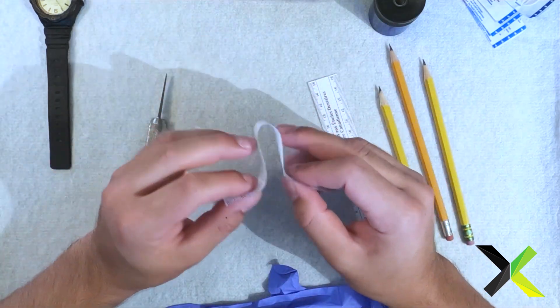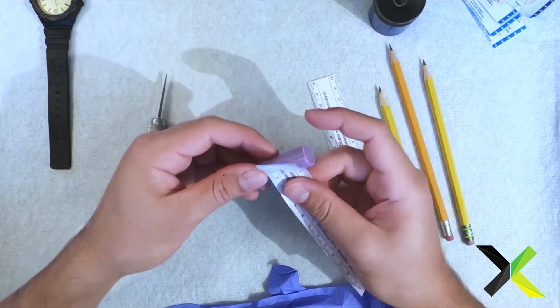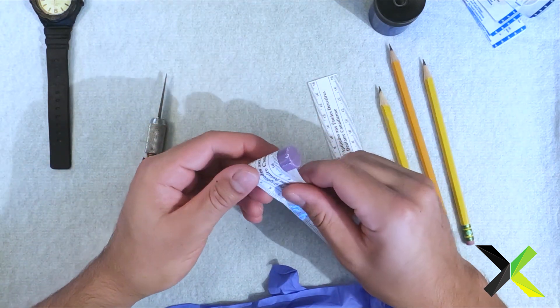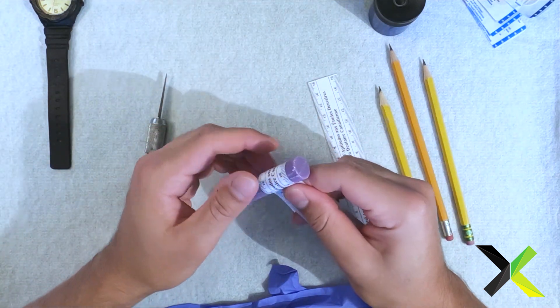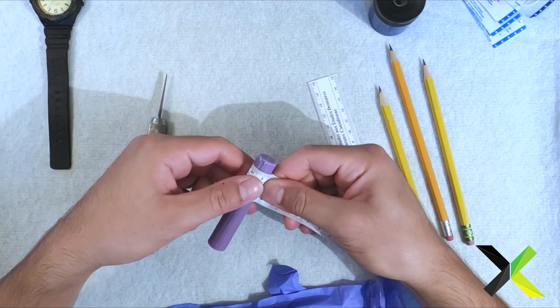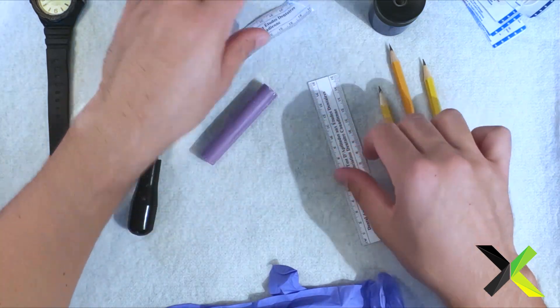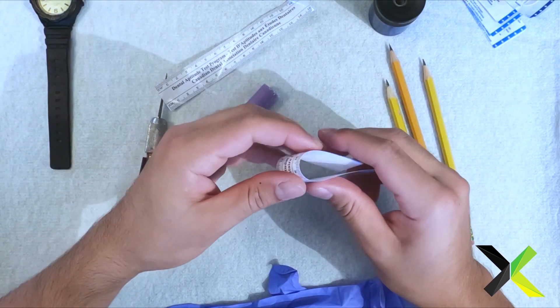When you're done peeling it back, you're left with this. It's a lot more flimsy, so you can wrap it around the soap a lot better when you're making your circumferential lines and doing your measurements. That's how I'd wrap it around the soap. If you try to do that with this firm ruler, it just doesn't wrap around nicely.